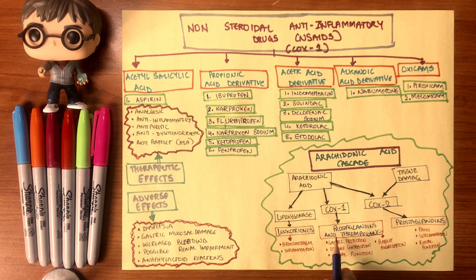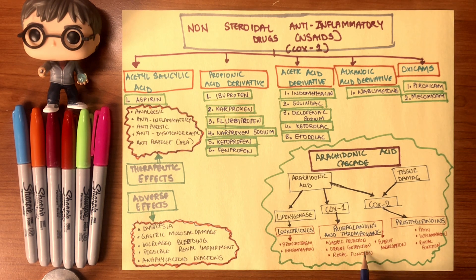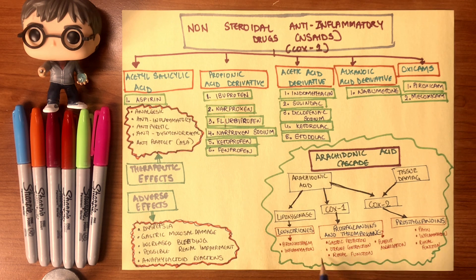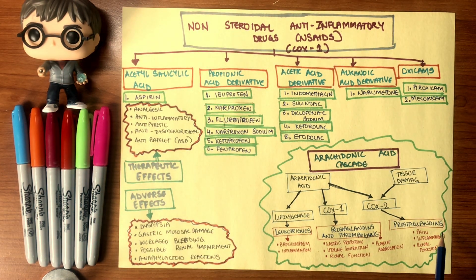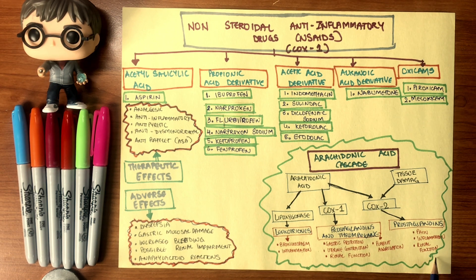When COX-1 is active, prostaglandins and thromboxanes are produced. Prostaglandins are associated with gastric protection, uterine contraction, and renal function, while thromboxanes are associated with platelet aggregation — meaning prostaglandins support normal body functions and thromboxanes create platelet plugs during excessive bleeding. When COX-2 is stimulated by arachidonic acid or tissue damage, prostaglandins and prostacyclins are produced, responsible for pain, inflammation, and renal function during emergencies.